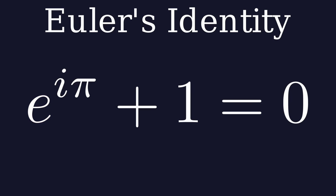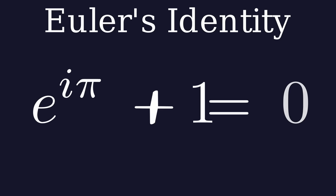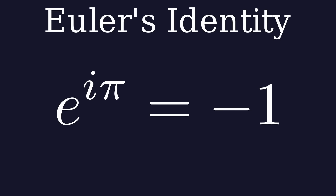At first glance, this equation might seem strange or hard to understand, because how does an irrational number raised to the power of another irrational number multiplied by i result in minus 1? And what does it even mean to raise a number to an imaginary power?